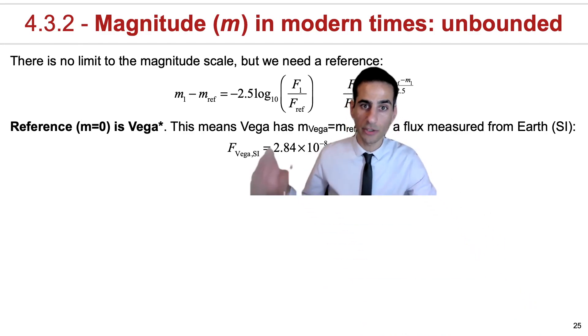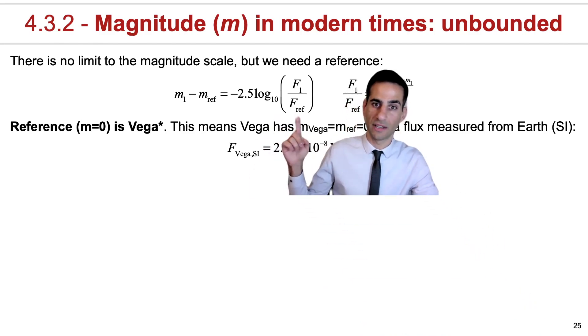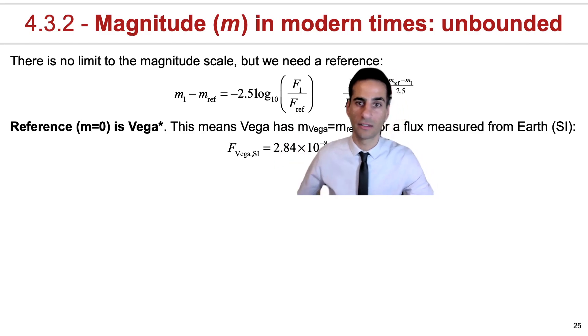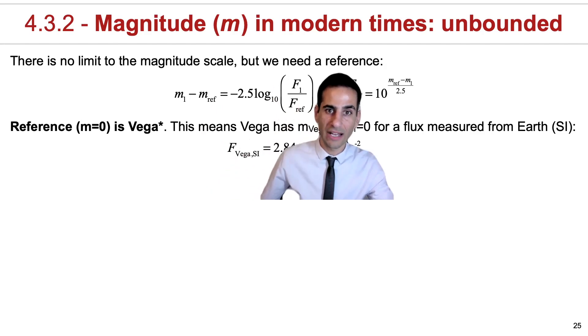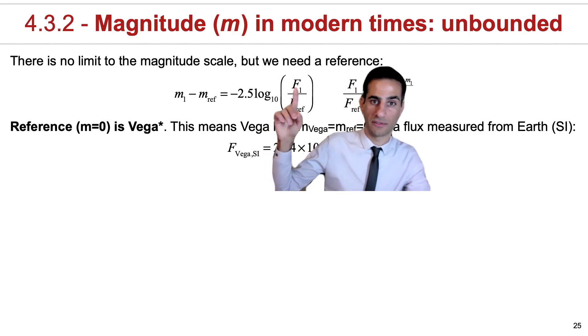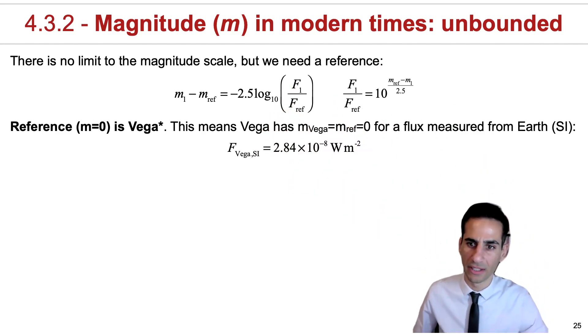This is how much it comes out of Vega here on Earth. If you do that, you could actually very easily place here the flux. And because, as a reference, this is zero, this term vanishes, and we can very directly get a magnitude of any star, given that we measure the flux of that star.